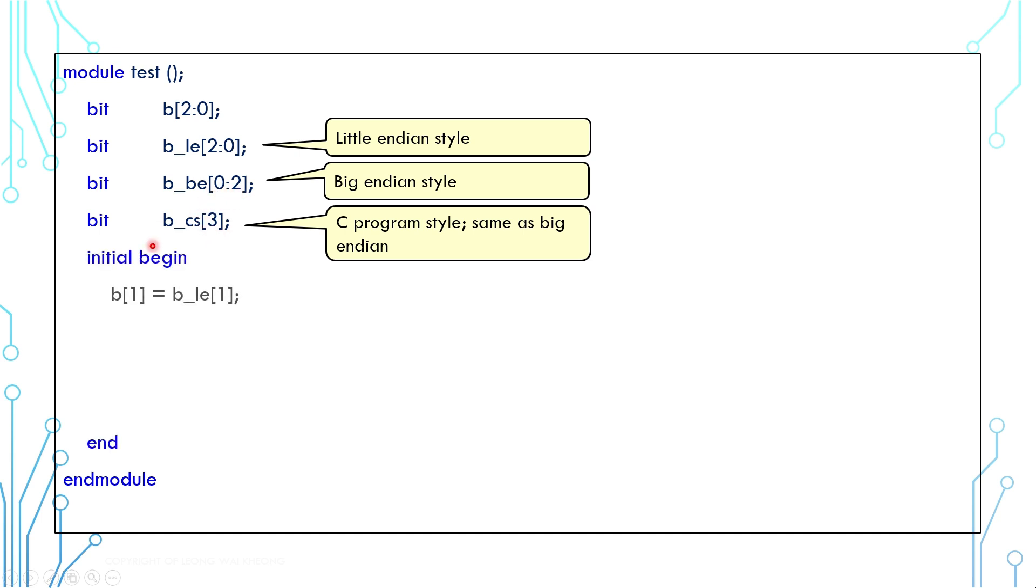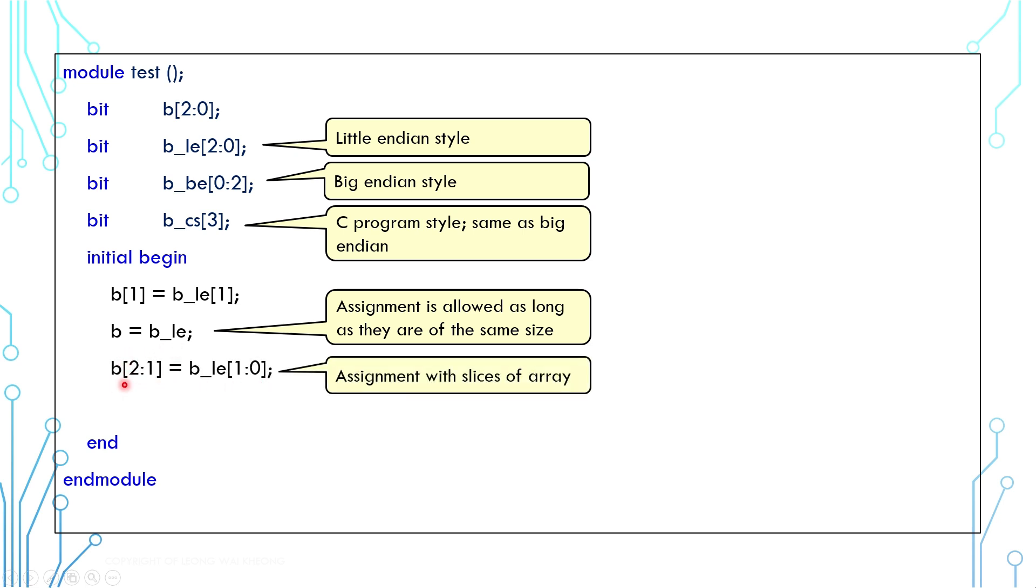You already know that you can assign one element to another. Be aware that the number 1 here means index, while the number 3 here means size. You can also assign the whole array to another. You can even assign slices of array instead of the whole array. The only rule you need to follow is that the size must match. For that, you can even assign a big endian array to a little endian one. Although you need to be careful about that because the index is reversed.